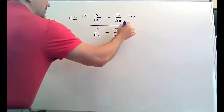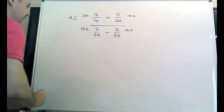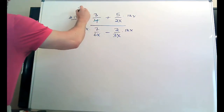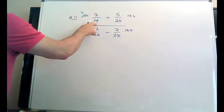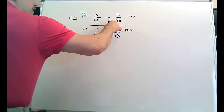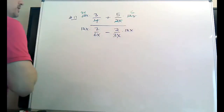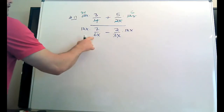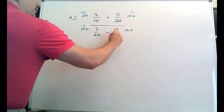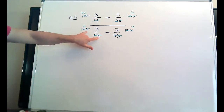Now remember, once you do this step, it completely destroys the problem, so you have to be careful. I'm going to do it in green. 12 divided by four is three, but what about the X? Nothing crossed it out, so that X is still there. 12 divided by two is six, but this X and this X cross out completely and leave you with a six. 12 divided by six is two — the X crosses out. 12 divided by three is four — the X crosses out.